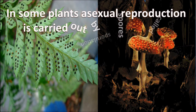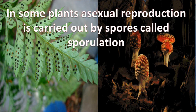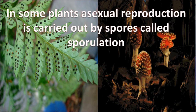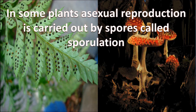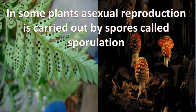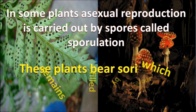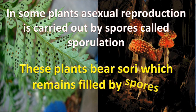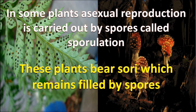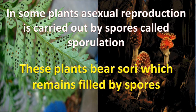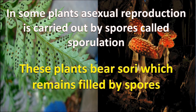In some plants, asexual reproduction is carried out by spores, called sporulation. For example, in fern plants, mushrooms, and horsetail — these plants bear sporangia in which spores remain, and the scattered spores germinate in favorable conditions.